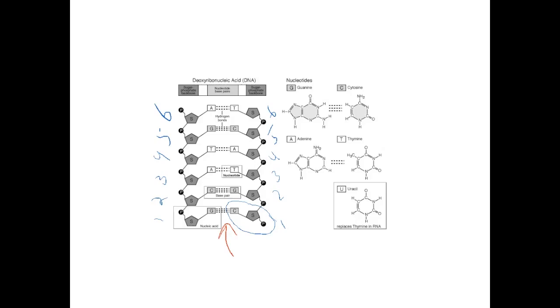The nitrogenous bases, remember we said some have two rings, and some have only one ring. The two ring structures are guanine and adenine, and the single ring structures are cytosine and thymine. Purines are another word, a category of nitrogenous bases that have two rings. Pyrimidines are a grouping of nitrogenous bases that have only one ring.